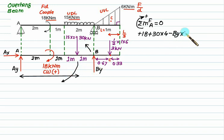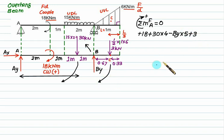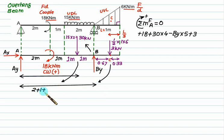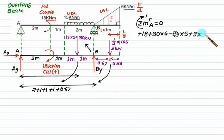The distance from A to the 30 kN load is 2 plus 1 plus 1, equal to 4 meters. By acts at a distance of 4 plus 1 equal to 5 meters. The 3 kilonewton load rotates clockwise about A, so it is positive: 3 multiplied by the perpendicular distance from A, which is 2 plus 1 plus 1 plus 1 plus 1 plus 0.67 equal to 5.67 meters. Solving: 18 plus 30 times 4 minus By times 5 plus 3 times 5.67 equal to 0, giving By equal to 31 kilonewton.